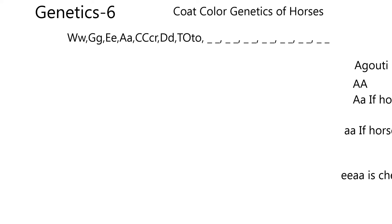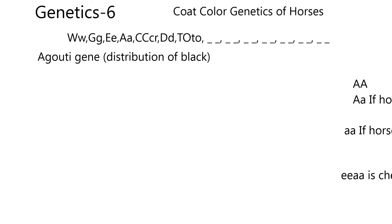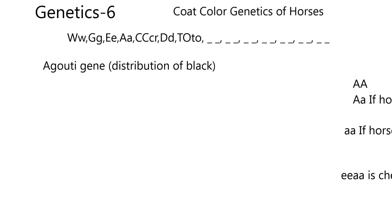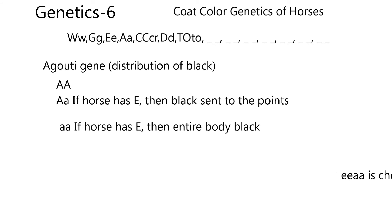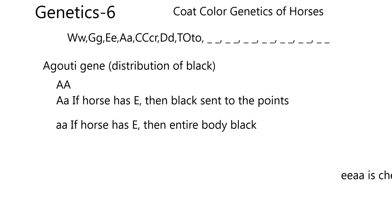Now the A gene — sometimes called the agouti gene — controls the distribution of black. If you have A/A or A/a (at least one large A) and the horse also has at least one E, the black is sent to the points: the mane, the feet, and the tail. If the genotype is a/a and the horse has at least one E, then the entire horse is black.